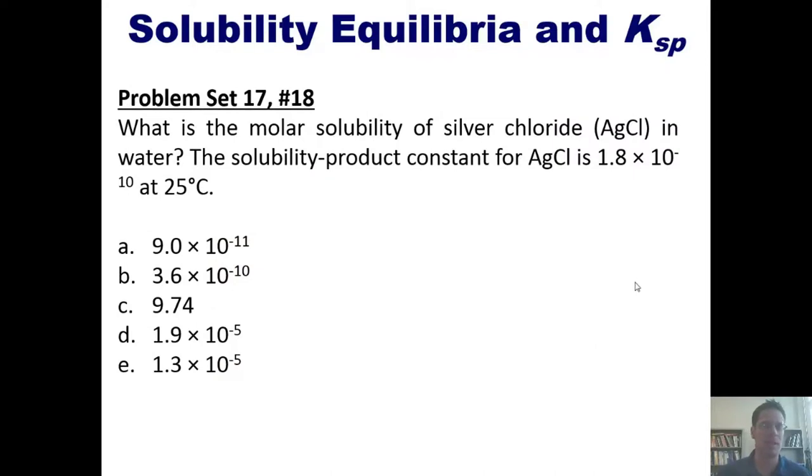What is the molar solubility of silver chloride in water? The solubility product constant for silver chloride is this number at 25 degrees C. As per usual, you can attempt this on your own, and then if you like, click the link here to a separate video in which I show you how to do it on the board.